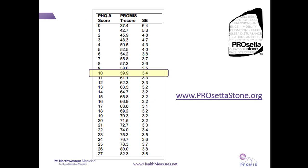find the score on a legacy measure, here the PHQ-9, and its equivalent PROMIS T-score and standard error. On this table, a score of 10 on the PHQ-9 is equivalent to a T-score of 59.9 on PROMIS depression.